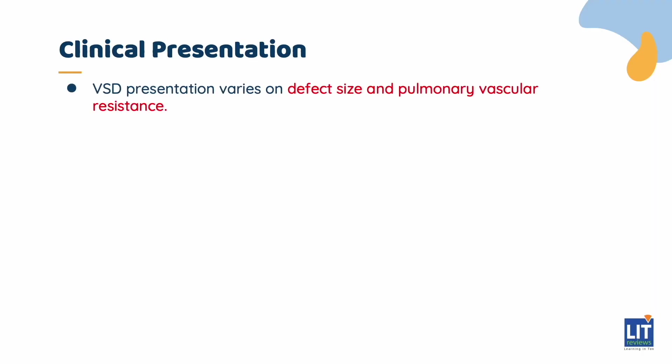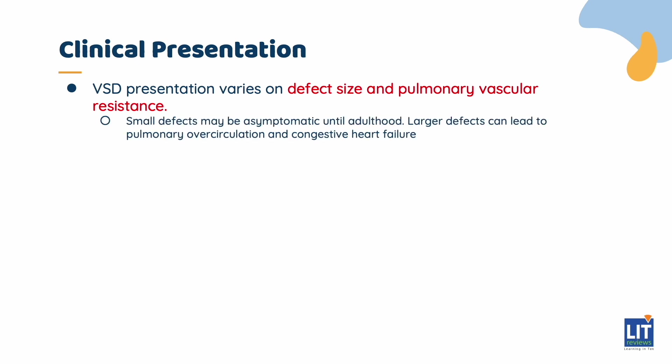The presentation of a VSD is highly variable and depends on both the size of the defect and the state of pulmonary vascular resistance. Patients with small defects tend to be asymptomatic and may present later as adults. Today, VSDs are largely picked up in neonates by a murmur noted on examination. Larger defects may lead to pulmonary over-circulation and eventually congestive heart failure, presenting in early childhood with tachypnea, dyspnea, fatigue, diaphoresis during feeding, and failure to thrive.